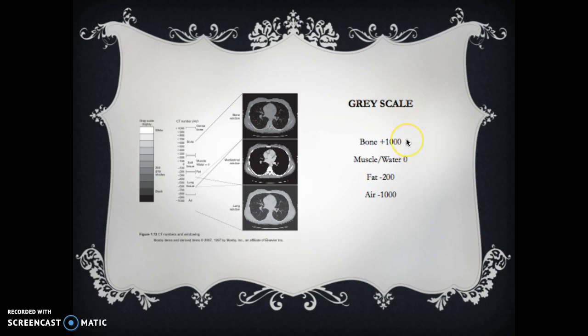It's based off of that. Bone is positive a thousand. Air is negative a thousand. Fat is negative two hundred. As you remember from the scale with bone being the most dense, then muscle, fat and air. It follows the same principles.